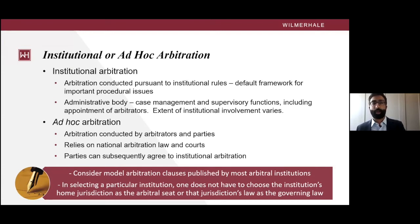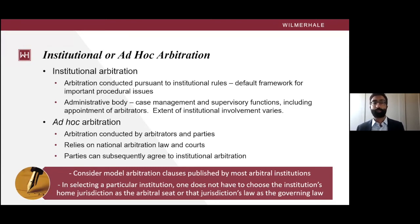Institutional rules address a number of important procedural aspects of the arbitration and provide for the institution to act as an appointing authority for arbitrators. The institution also carries out many other important functions to assist in the arbitration, such as constituting the tribunal, hearing challenges to arbitrators, and fixing the costs of the arbitration, including the arbitrator's fees. In some cases, institutions may scrutinize the tribunal's award before it is issued to the parties. Ad hoc arbitrations, by contrast, are conducted by the parties and the arbitrators without the support of an arbitral institution, and come with risks of procedural breakdowns, technical defects in the arbitral award, and problems with arbitrator's fees.